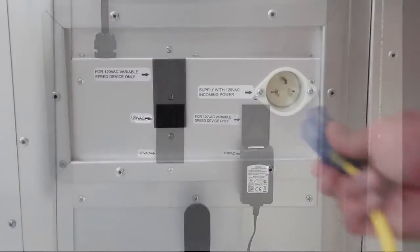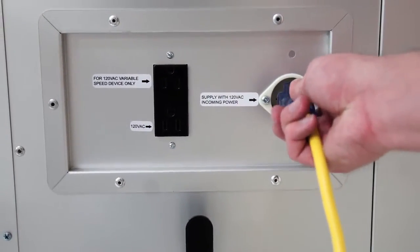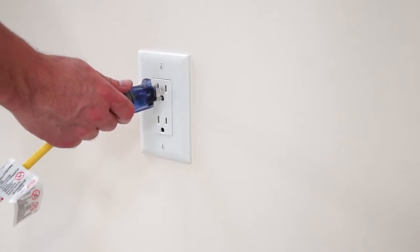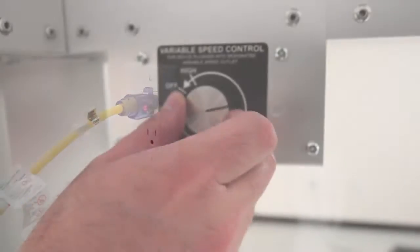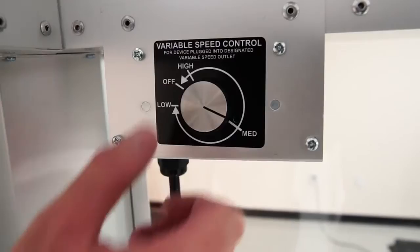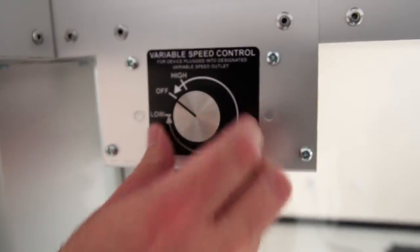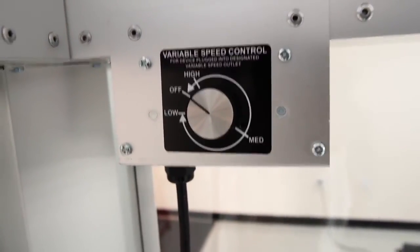Provide power to the AG8000 unit by plugging an extension cord into the power supply outlet on the back of the unit and the other end into a 15 amp receptacle. You can now turn on and control the speed of the scrubber using the variable speed knob located on the back wall of the AG8000 unit.